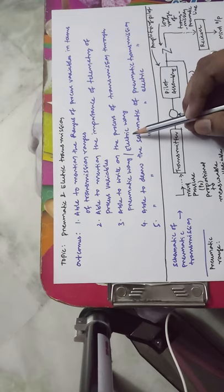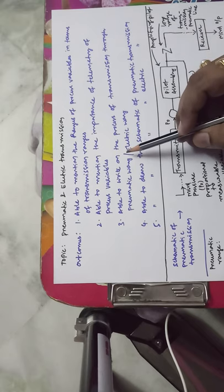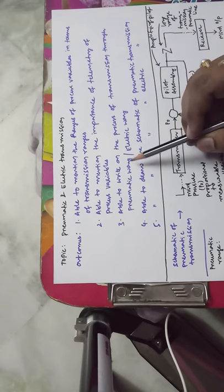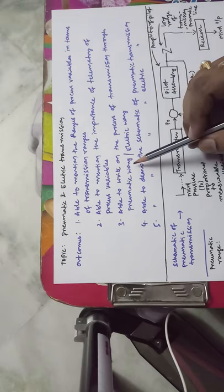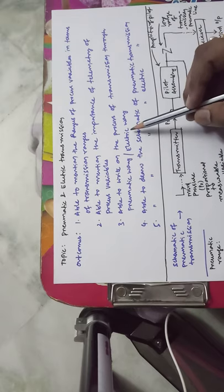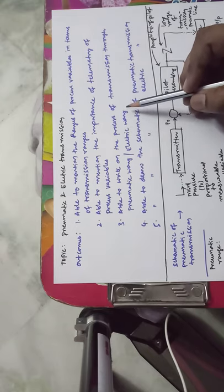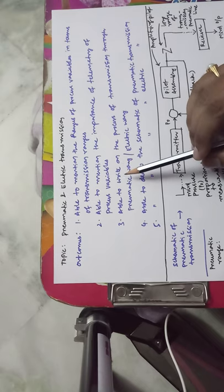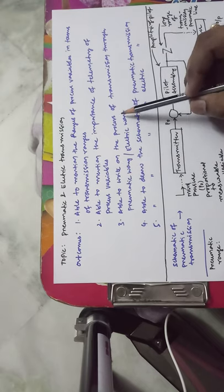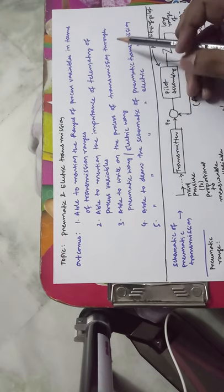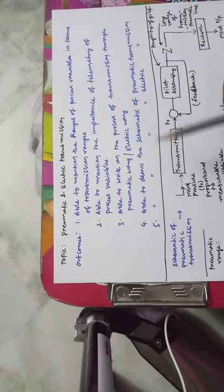Most process variables will be transmitted either in pneumatic pressure in the range of 3 to 15 PSI, or through electrical transmission using 0 to 5 volts of voltage, or 4 to 20 milliamps of current. The student will be able to write on the process of transmission through pneumatic or electrical means.